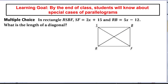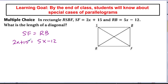In a rectangle, SF and RB are the two diagonals, so they must be equal. Setting 2X + 15 equal to 5X − 12 gives 3X = 27, so X = 9. Plugging back in, both diagonals equal 18 + 15 = 33. We can use this property to solve problems where diagonals are given as algebraic expressions.